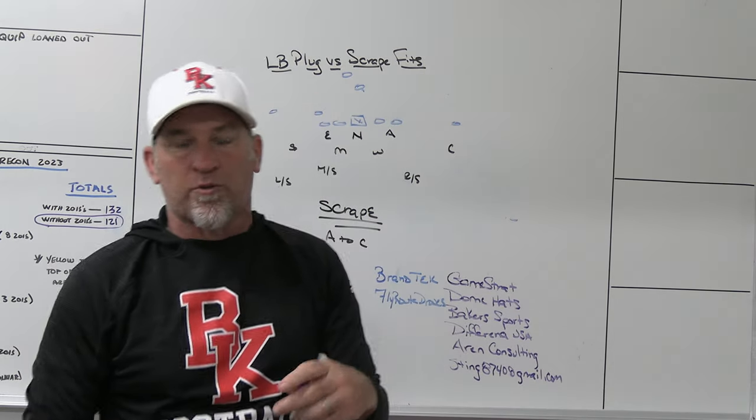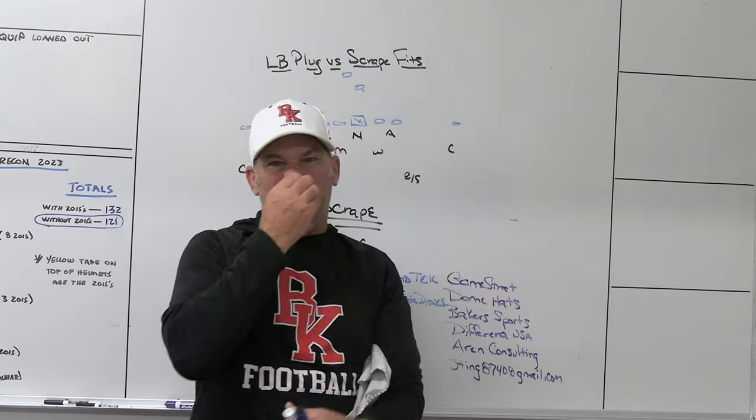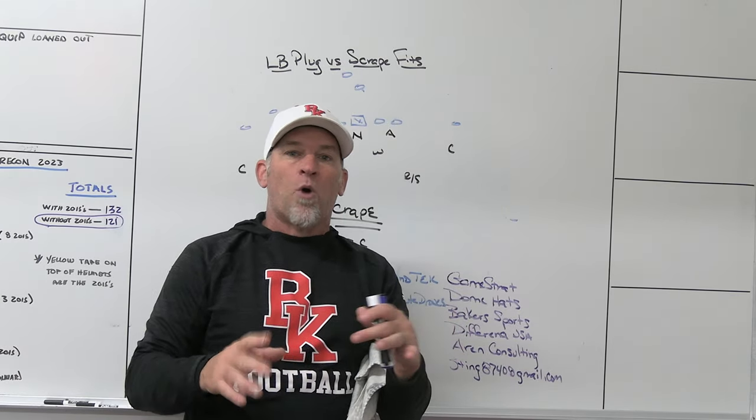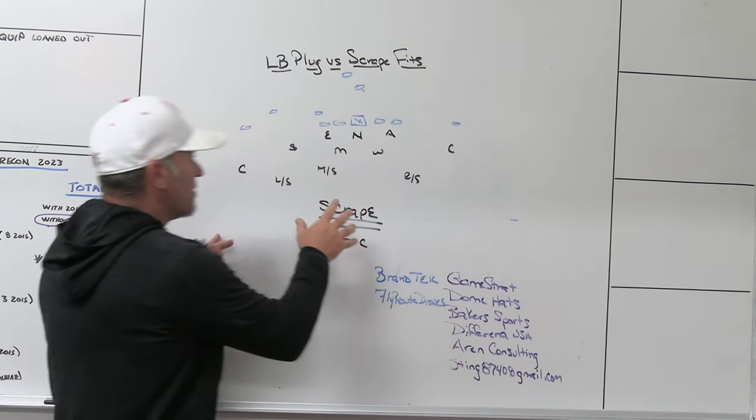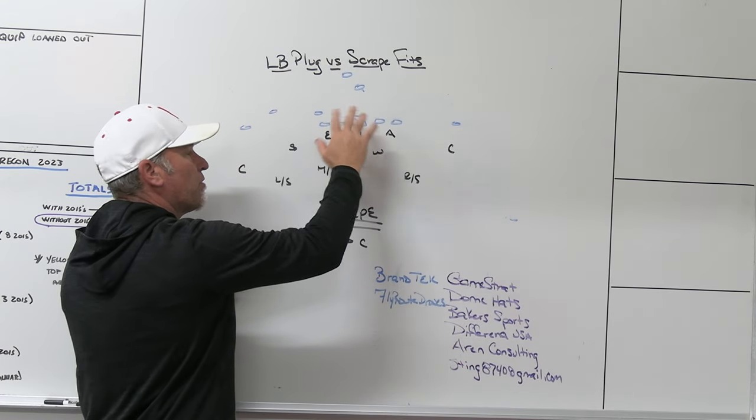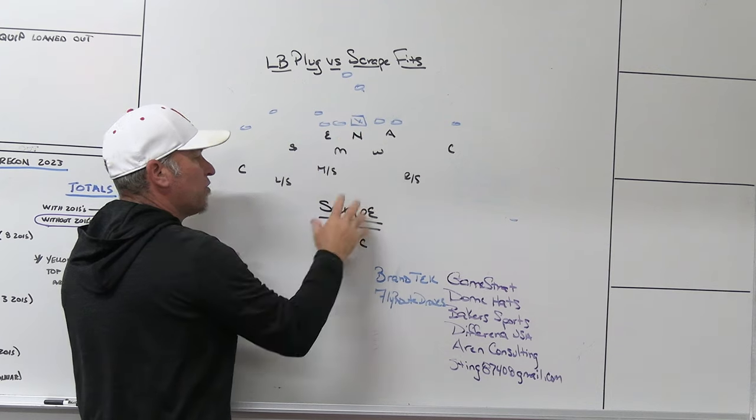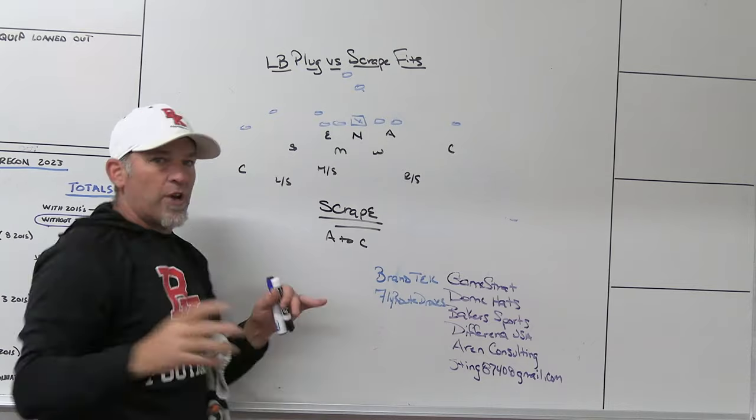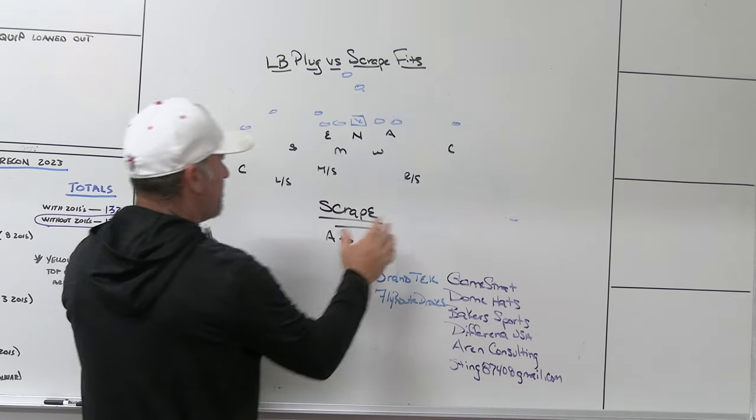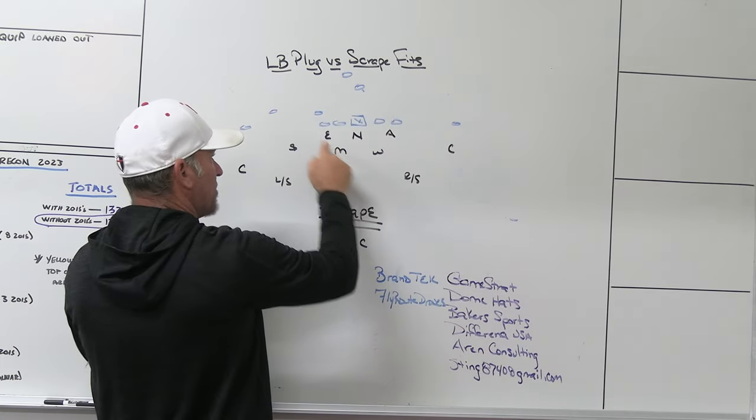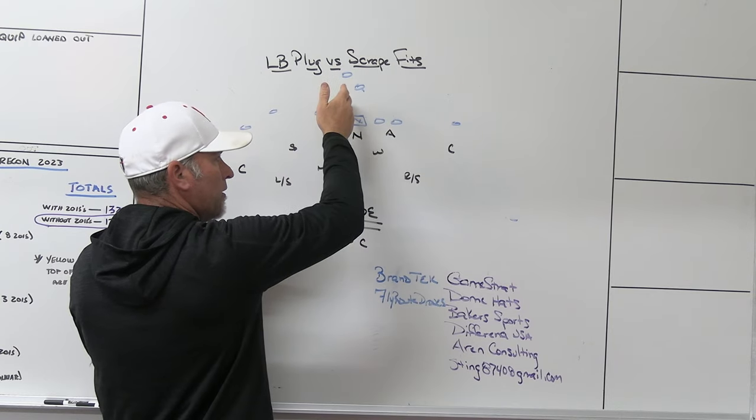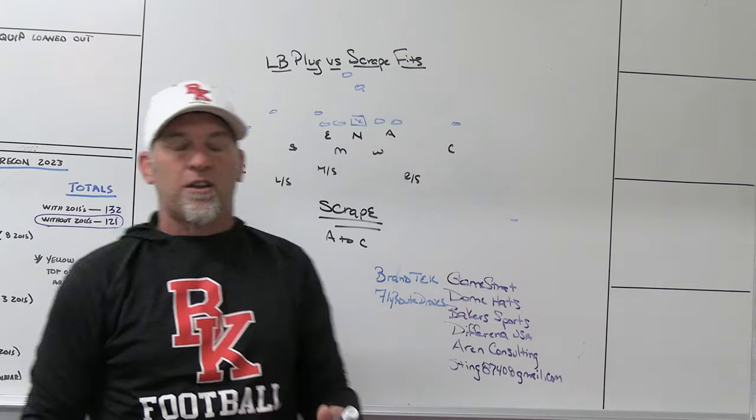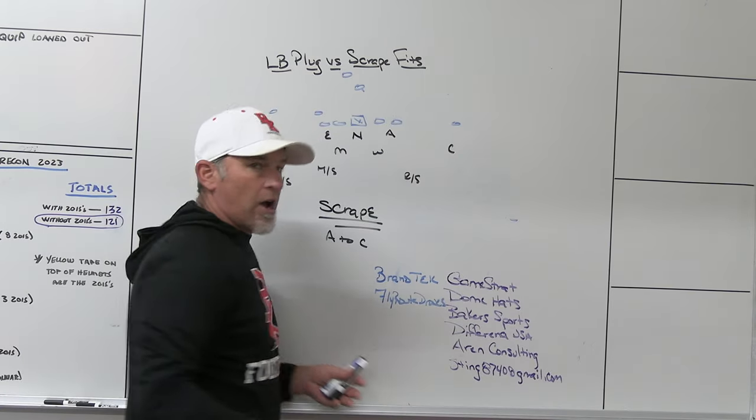And our linebacker coach from week to week, there's times where we're going to read the Y off. There's times where we're going to read center guard center. We're going to read triangles. There's times where our coach teaches what he calls half line reads, full line reads. So when we're in our scrape fit world, that is how we are reading. That is how we are fitting. Each week I talk to my linebacker coach and ask him, hey, what do you think the tendencies are this week? Can we get away with reading Y off? Yes or no. If not, half line, full line. And I let him during the week determine what our guys are going to read.